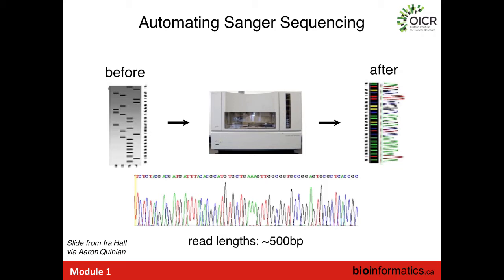In the next 20 years, Sanger's technique was refined primarily through automation, which allowed the sequencing chemistry to be performed at scale. The key innovations were: rather than using four separate reactions for the different dideoxynucleotides, the reaction was done in a single tube with fluorescently labeled nucleotides, where each nucleotide has a unique color. You'd separate them using a capillary tube and get the distinctive Sanger trace — you just read off the sequence of nucleotides by looking at the colors of each peak.